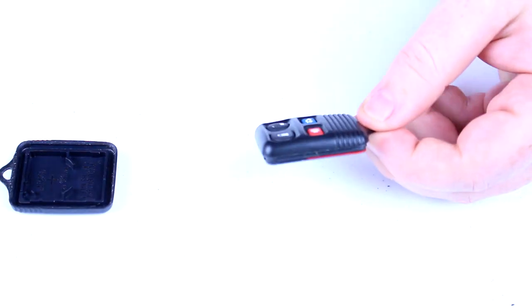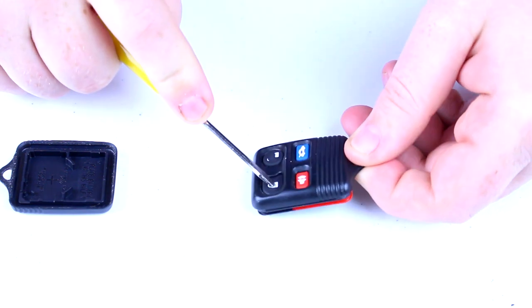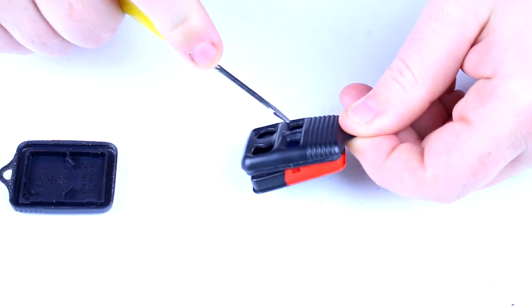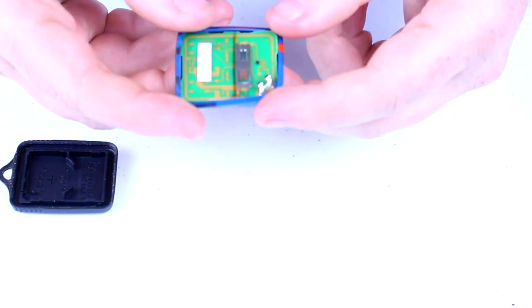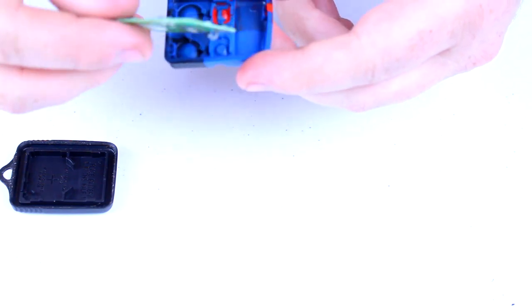With this open like this, all you have to do is press in on one of the buttons or a few of the buttons and pop out that rubber gasket-y button material. Now the chip is contained inside this and you can pop that out.